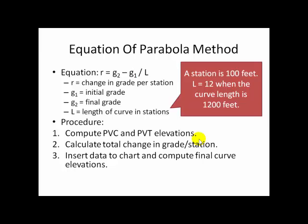Once we have these values, G1, G2, and L, we can calculate R. And R will be a portion of step three here. Number one, first we'll compute the PVC and PVT elevations using normal slope calculations. Number two, we'll calculate the value of R, that is the total change in grade per station. And then number three, we'll insert our data into a chart, we'll illustrate here in a moment, and compute final curve elevations.